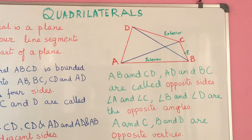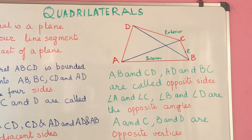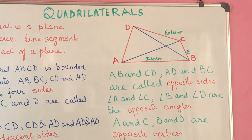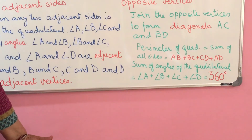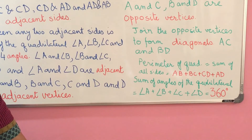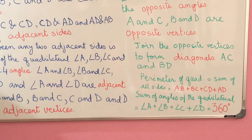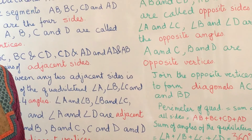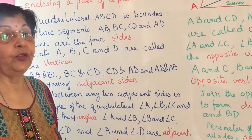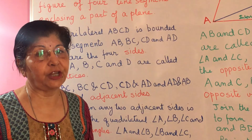Three angles of a quadrilateral are equal, and each equals 100 degrees. Can you find the fourth angle? All four angles sum to 360 degrees. Three angles sum to 300 degrees, so the fourth angle equals 60 degrees. Now interact with your friends and ask each other such simple questions. If you enjoyed this video, please like it, share it, and subscribe to the channel. Thank you.